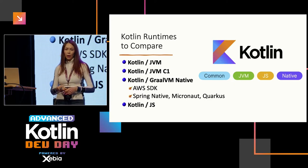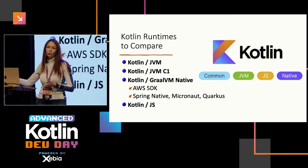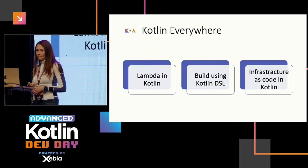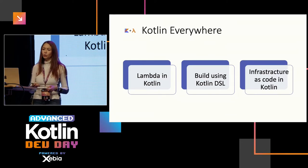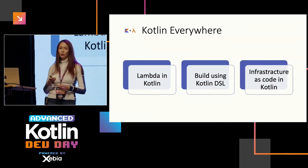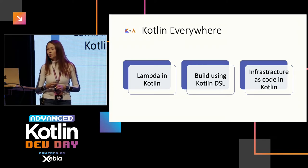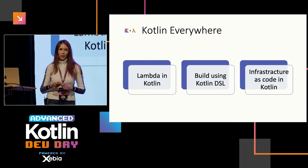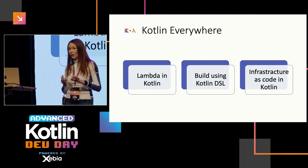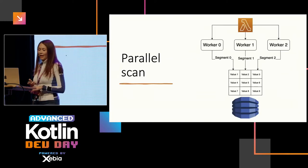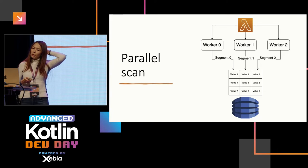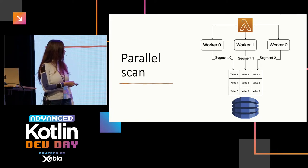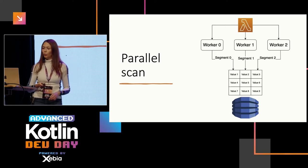We're going to compare startup time and execution time — both are important for overall application performance. We'll create the Lambda in Kotlin, build it with Gradle using Kotlin DSL, and create infrastructure as code in Kotlin using the Cloud Development Kit. So everything is Kotlin — I love that.